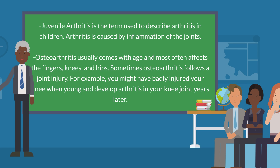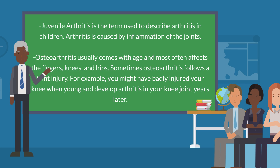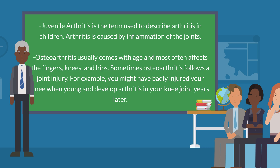Osteoarthritis usually comes with age and most often affects the fingers, knees, and hips. Sometimes osteoarthritis follows a joint injury. For example, you might have badly injured your knee when young and develop arthritis in your knee joint years later.